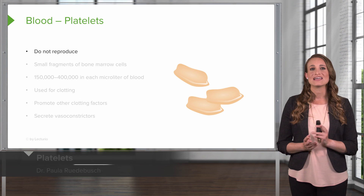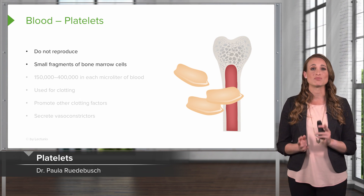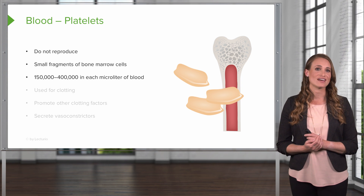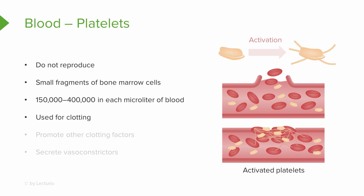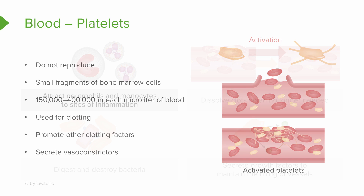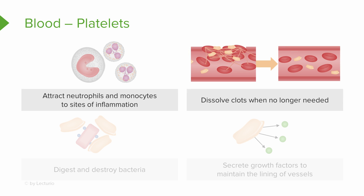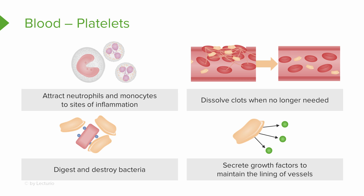Next are the platelets. These do not reproduce. These are small fragments of bone marrow cells. Normal values range from about 150,000 to 400,000, and these are used for clotting. They also promote other clotting factors in the clotting cascade, and these secrete vasoconstrictors. Platelets attract neutrophils and monocytes to a site of inflammation. They're also responsible for dissolving clots when they're no longer needed, and they can digest and destroy bacteria. They're also going to secrete growth factors to maintain the lining of the vessels.